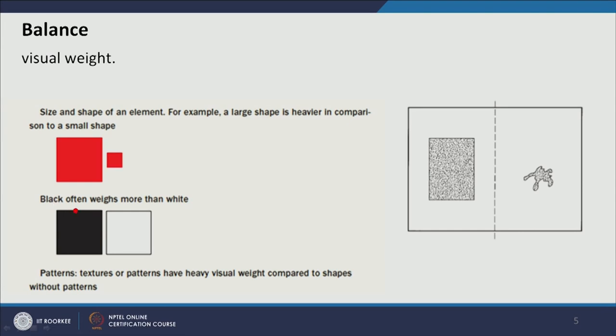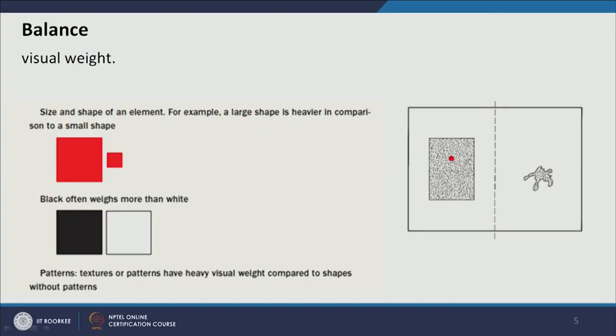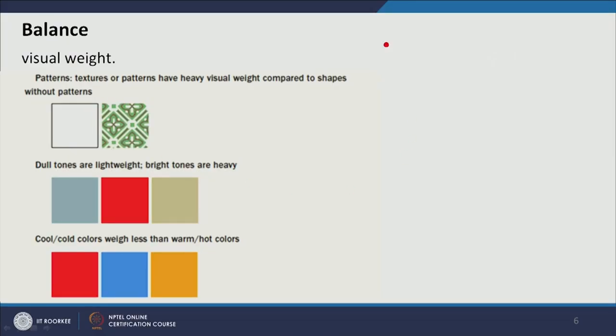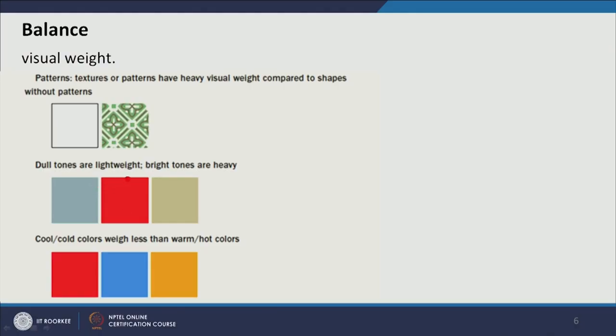Black has higher weight than white — the higher the value, the lower the visual weight. Adding white to a color increases its value and lowers its visual weight, so in a composition one side with black versus one side with white will make the white side lighter. For pattern and texture, the side carrying complex pattern and texture will be visually heavy. Dull tones have less weight and bright tones have more weight.